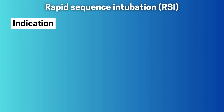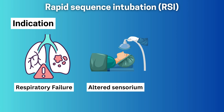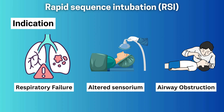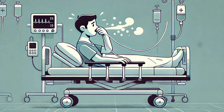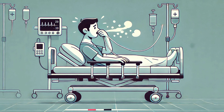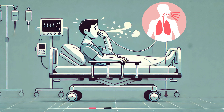When do we use RSI? Think of situations like respiratory failure, when someone's lungs just aren't working well enough, or if someone has a really low level of consciousness and can't protect their airway from things like vomit. We also use it if there's an obvious blockage in the airway, or if someone needs emergency surgery. RSI is a bit different from a regular intubation — the big difference is that we give medications to make the patient unconscious and relax their muscles really quickly, all at the same time. This is super important because when someone's airway is compromised, there's a serious risk of them inhaling stomach contents into their lungs — that's called aspiration, and we want to avoid it at all costs.